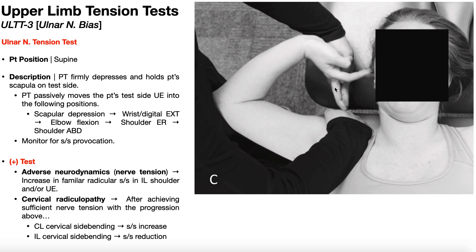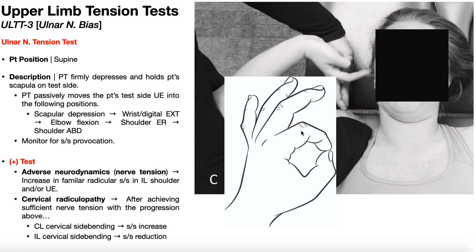One way to ensure you get digits 3, 4, and 5 is to have the patient make an OK sign before going through the progression of movements. That gets digits 1 and 2 out of the way and leaves digits 3, 4, and 5 for easy extension. I always start by having the patient make this OK sign.